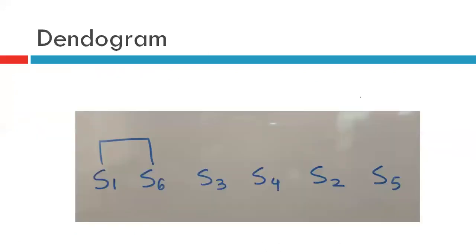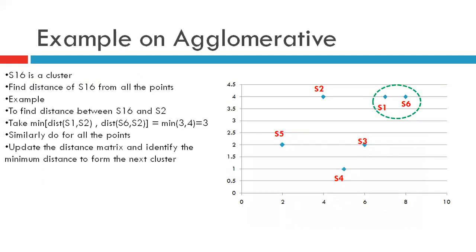Now let us draw the dendrogram. Dendrograms are tree-like structures that give us a pictorial representation of the hierarchical agglomerative clustering algorithm. We will be able to view pictorially how our clusters are merged together, forming a tree called a dendrogram. The first merging was done between sample points s1 and s6. Now cluster s1–s6 is formed. The points s2, s5, s3, and s4 are our remaining individual clusters.